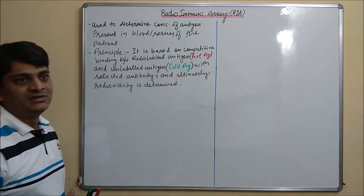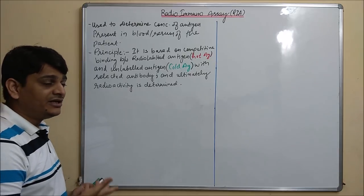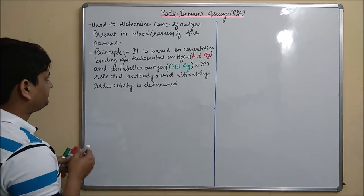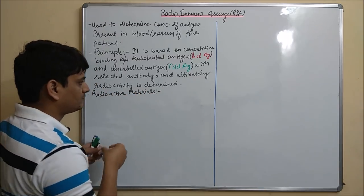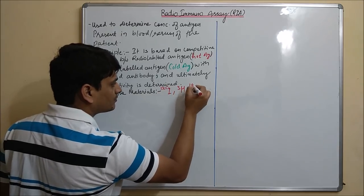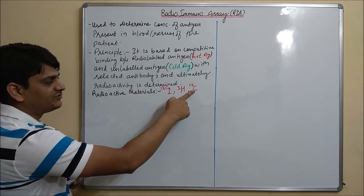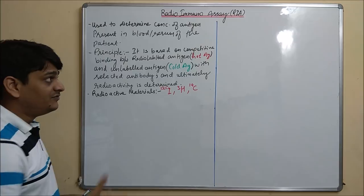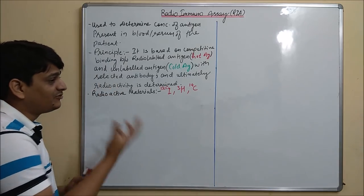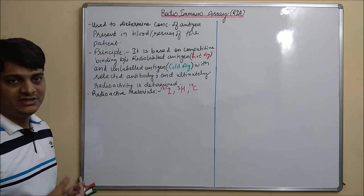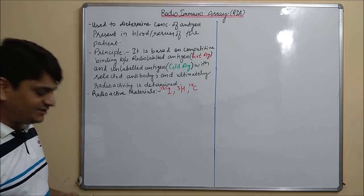The basic radiolabeled substances used in RIA are iodine-125, tritium (H-3), and carbon-14. These are the main radioactive materials used for radiolabeling in radioimmunoassay. I am going to explain two methods used in RIA: the qualitative method and the quantitative method. I will first discuss the qualitative method.